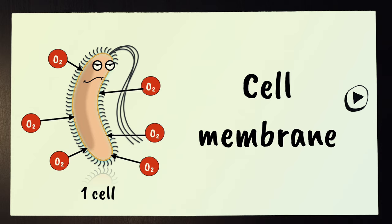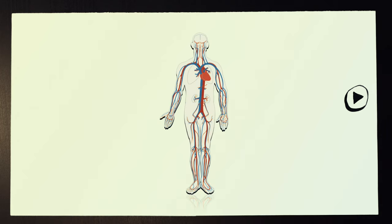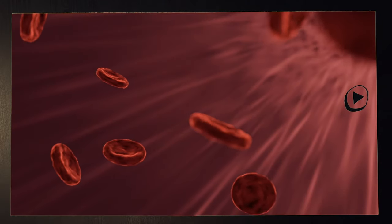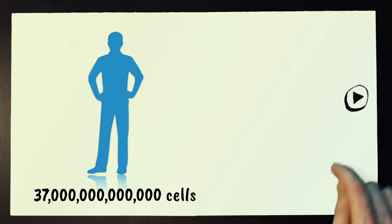Large organisms like us humans are made up of millions of cells. To get the important stuff like oxygen to all of the cells that make up our bodies, we have a transport system that takes things to where we need them. We rely on the blood to transport what we need to where we need it.